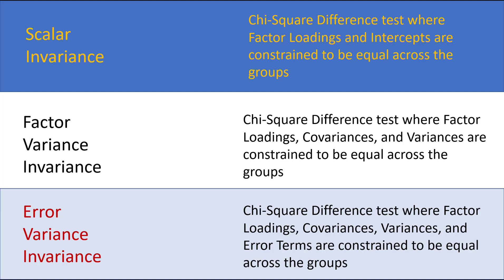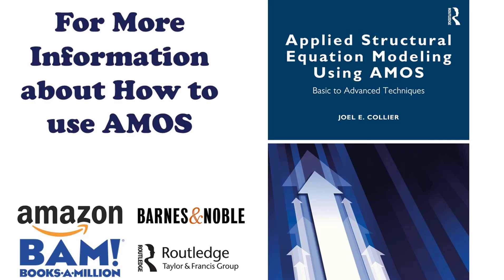Most prominently, reviewers want to see configural invariance and metric invariance, and sometimes scalar invariance. Once you establish those three, they're generally satisfied that you've shown invariance. It's very rare to be asked for factor variance invariance or error variance invariance. If you're looking for more information on how to run invariance testing in AMOS structural equation modeling, I'd encourage you to check out my book, Applied Structural Equation Modeling using AMOS, which gives a step-by-step process of how to do this, where to find the results, and how to report it for academic research.